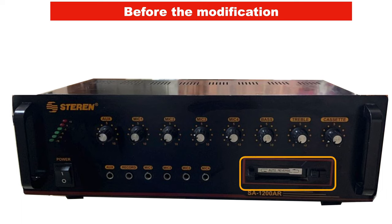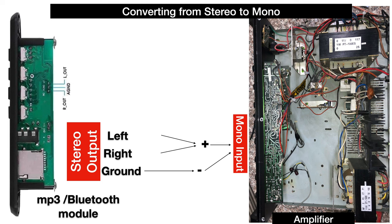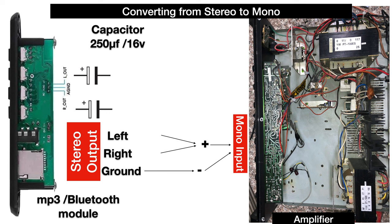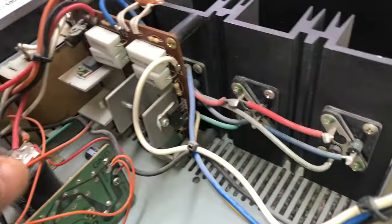Here is the before: this cassette unit. We are going to remove it and install the MP3 module, which will look like this, using the cassette player's faceplate as a mounting bracket. One problem: the module is stereo but the amplifier is mono. So I'm going to build a mixing circuit using 250-microfarad capacitors to mix the left and right outputs into one mono input, with a shared ground, and inject it into the amplifier.